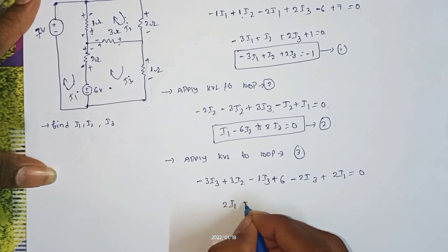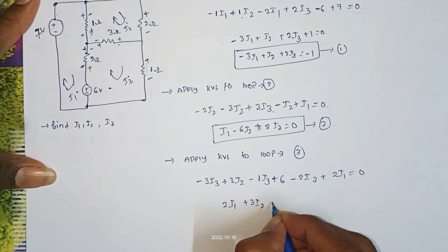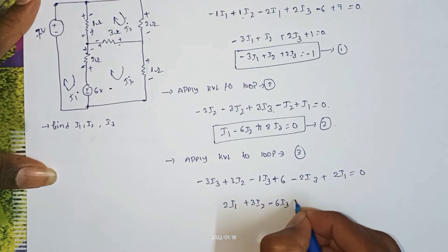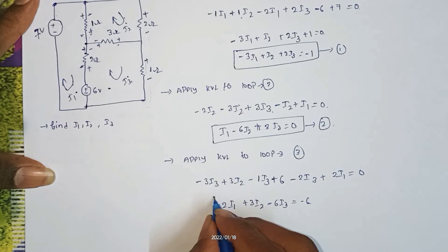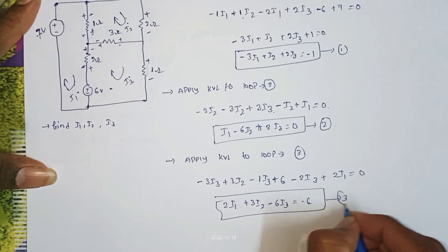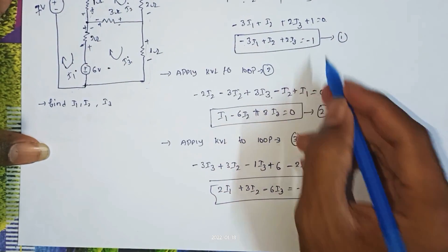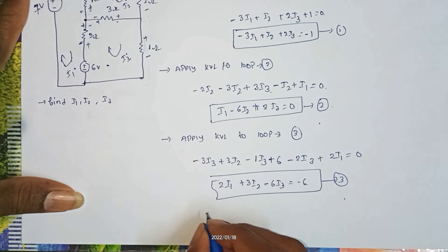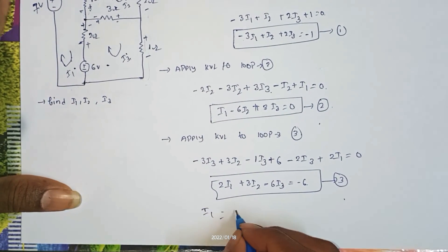Plus 6 minus 2 I3 plus 2 I1 equal to zero. So 2 I1 plus 3 I2 minus 6 I3 equal to minus 6. This is equation 3. Solve equations 1, 2, and 3.